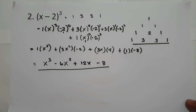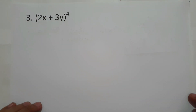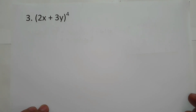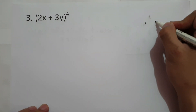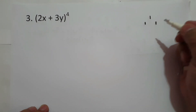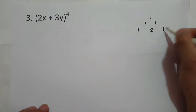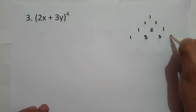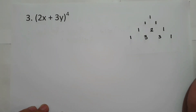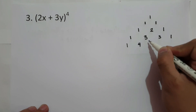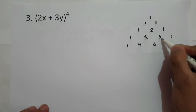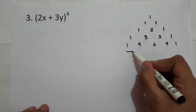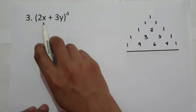Let's have another example. On number 3, we have (2x plus 3y) raised to 4. To solve this expression, we are going to use Pascal's triangle: 1 in the first row; 1, 2, 1 in the second row; 1, 3, 3, 1 in the third row; and 1, 4, 6, 4, 1 in the fourth row. So these are the coefficients we are going to use.